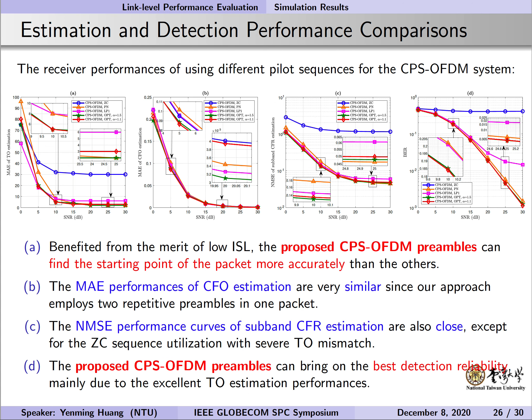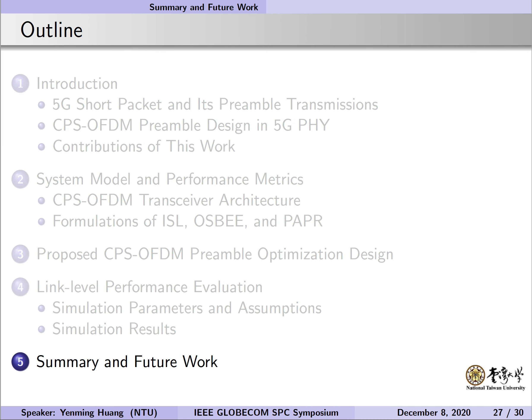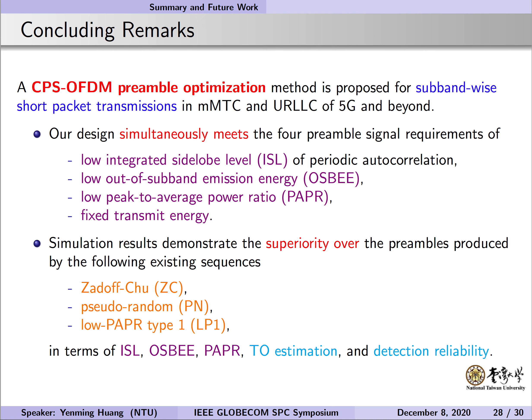Here we exhibit the CPS-OFDM receiver performances of using different pilot sequences. Please especially focus on the red curve and the green curve for our proposals in these four figures. They have the lowest bit-error rates, mainly due to their excellent TO estimation.